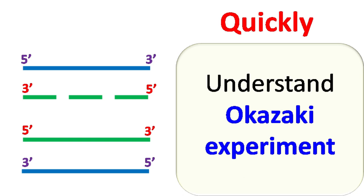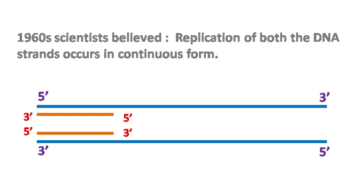In late 1950s and 1960s, scientists believed that the replication of both the DNA strands occur in continuous form.